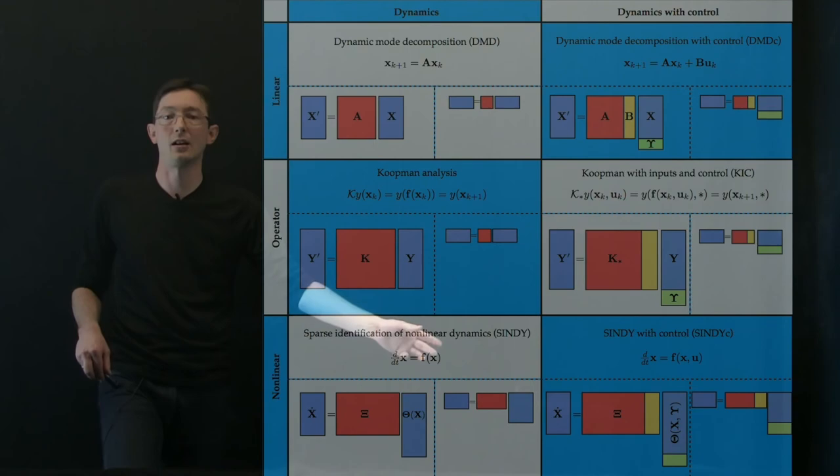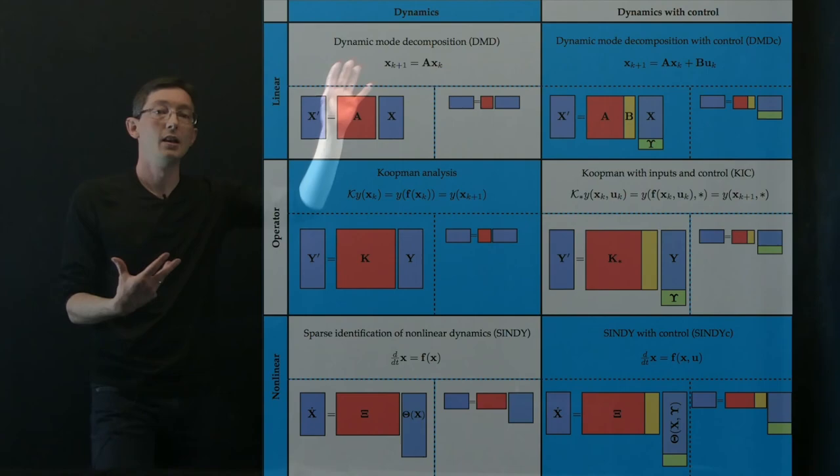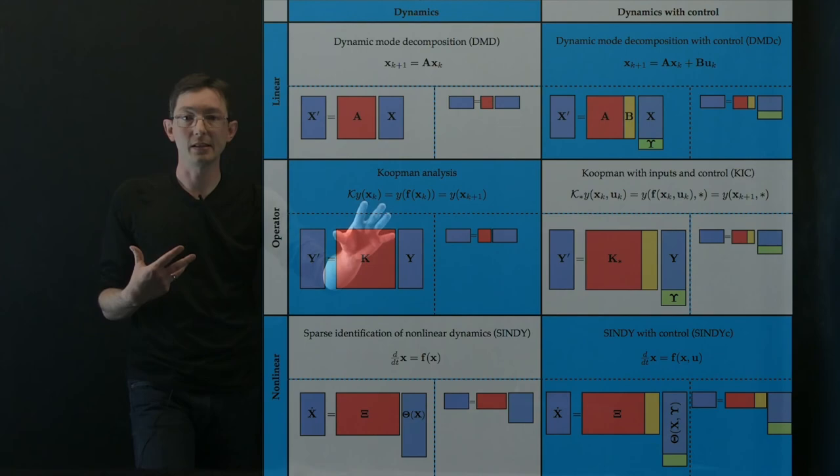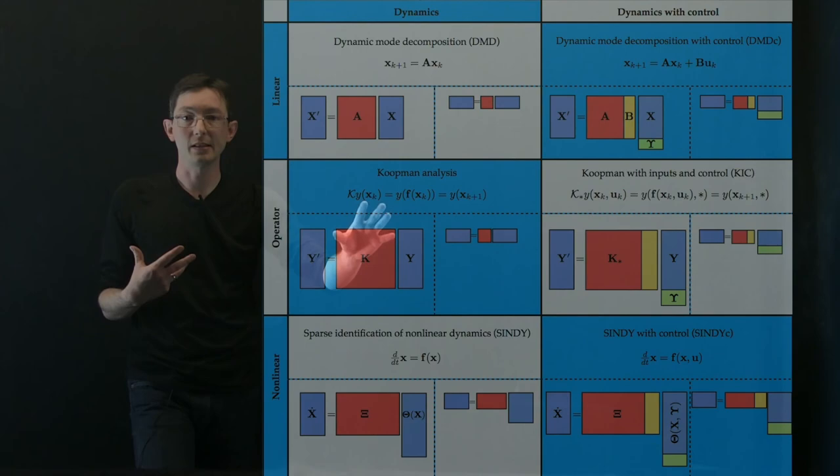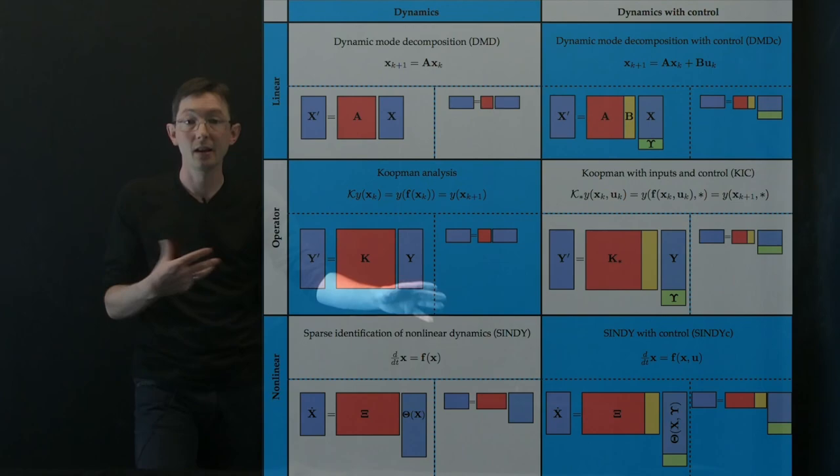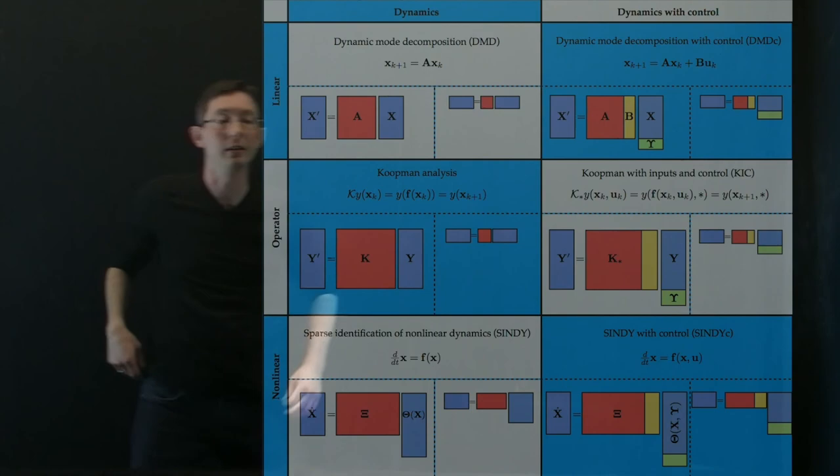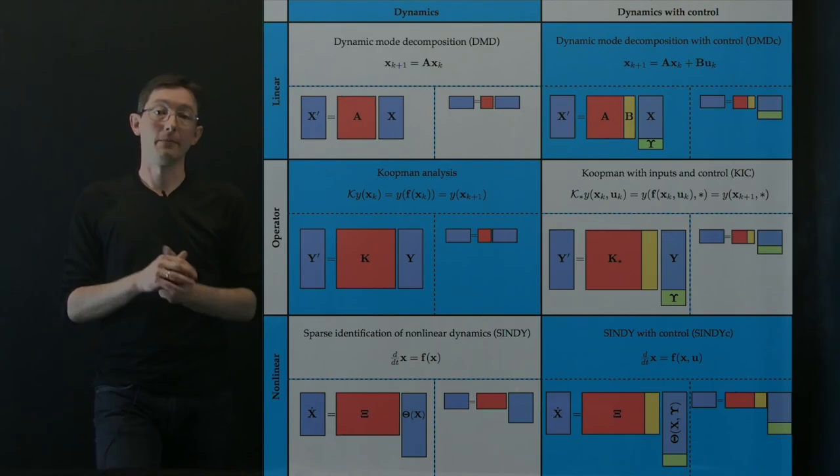So this is kind of just a pictorial overview of how this data-driven regression framework works. I can have linear models, I can have these linear representations of nonlinear systems, or I can have fully nonlinear models. These all exist and were developed in the past. But now what we're going to do is extend these to handle inputs and control over here. And then we're going to use those models, for example, with model predictive control for actual high-dimensional complex, possibly nonlinear systems. Thank you.